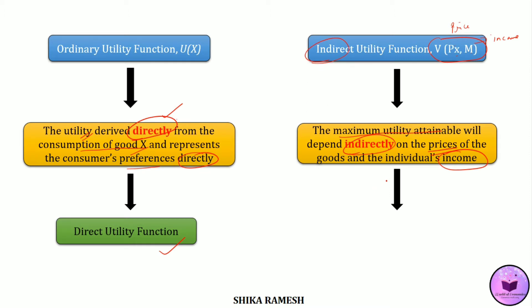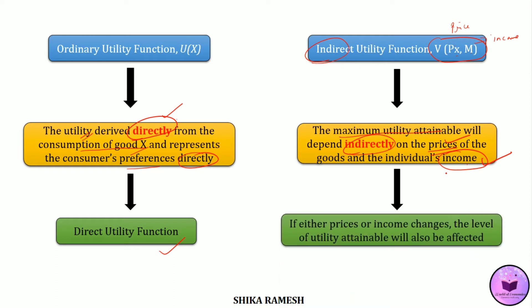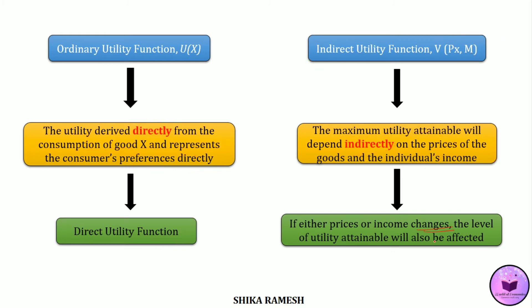Now, how is it indirect? The consumer is focusing on the price of the good as well as the consumer's income in order to purchase that product. If the consumer is okay with the price of the product and the price comes within the consumer's income limit, then he gets a satisfaction or utility that he can purchase that product — that is what is called indirect utility. And if either price or the consumer's income changes, the level of utility will also be affected.